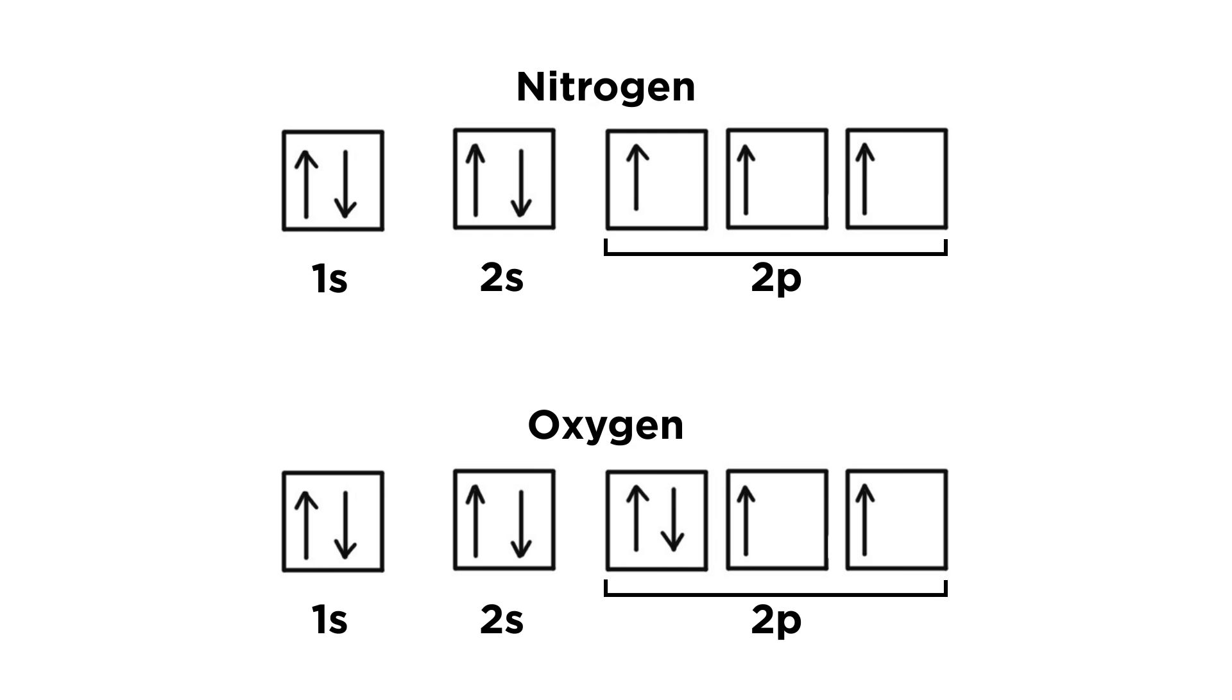Here is nitrogen's orbital diagram as well as oxygen's. Notice that nitrogen's 2p orbitals are precisely half full. This gives nitrogen a special stability just like elements that have a full outermost shell. If nitrogen loses an electron, it loses that special stability, but if oxygen loses an electron, it will gain that special stability. That's why oxygen's ionization energy is a little bit lower than nitrogen's, even though oxygen has one additional proton. All deviations from the ionization energy trend can be explained by discrepancies in orbital symmetry like this one.